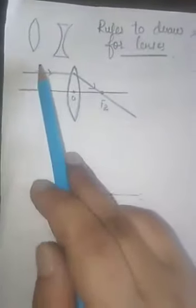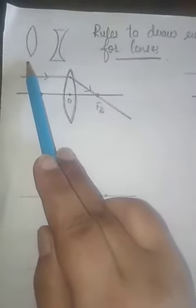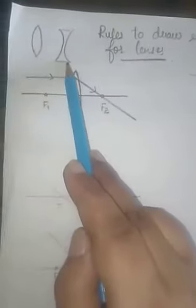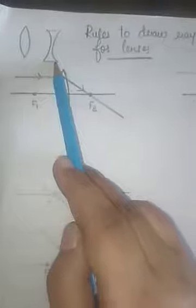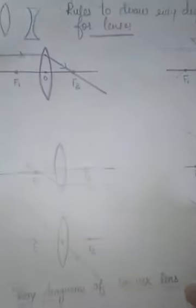There are some rules to draw ray diagrams for lenses, the same as the rules in spherical mirrors. There are two types of lenses: convex lens and concave lens.